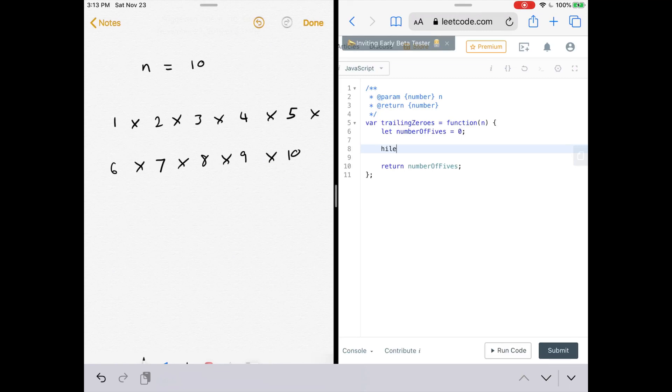But now we have to increment it every time we get to a number 5. So we'll say while n is greater than or equal to 5, what do we need to do? We need to divide that number by 5 and add that to our variable. So number of fives plus or equals math dot floor n divided by 5.